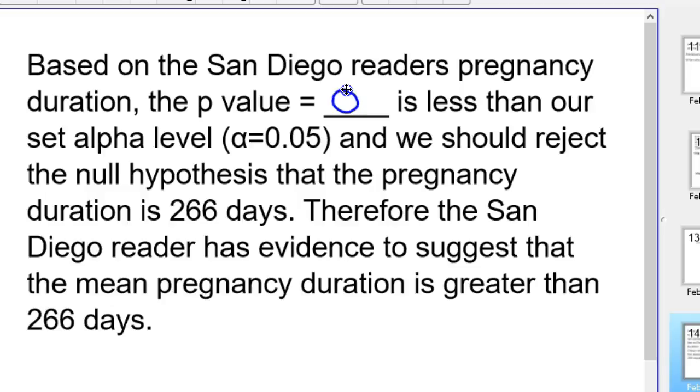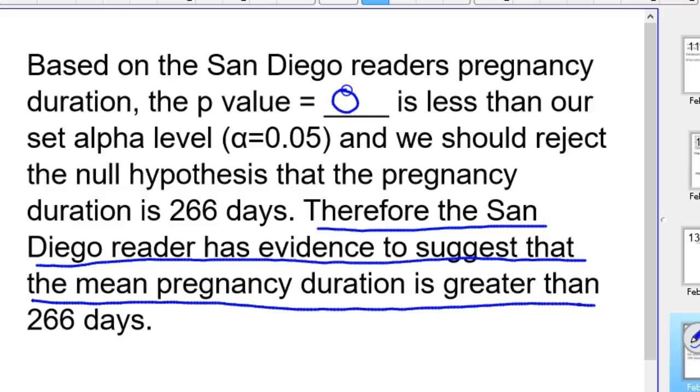Based on the San Diego reader's pregnancy duration, the p-value of 0 is less than our set alpha level of 0.05, definitely below 0.05. We should reject the null hypothesis that the pregnancy duration is 266 days. Therefore, the San Diego reader, if she's telling the truth, has evidence to suggest that the mean pregnancy duration is indeed greater than 266 days.